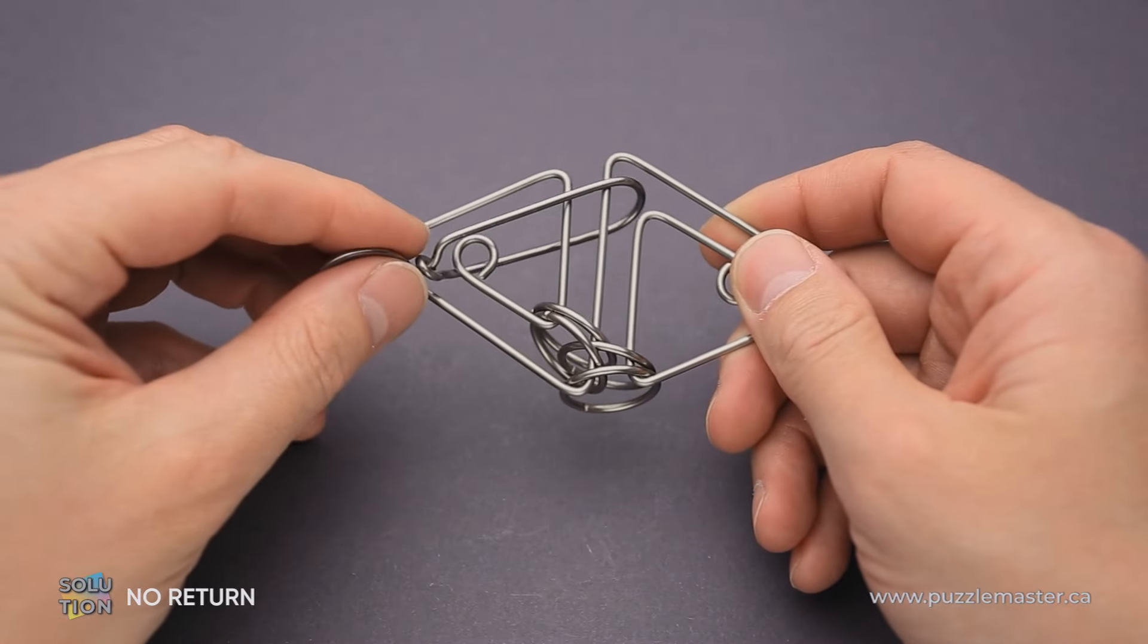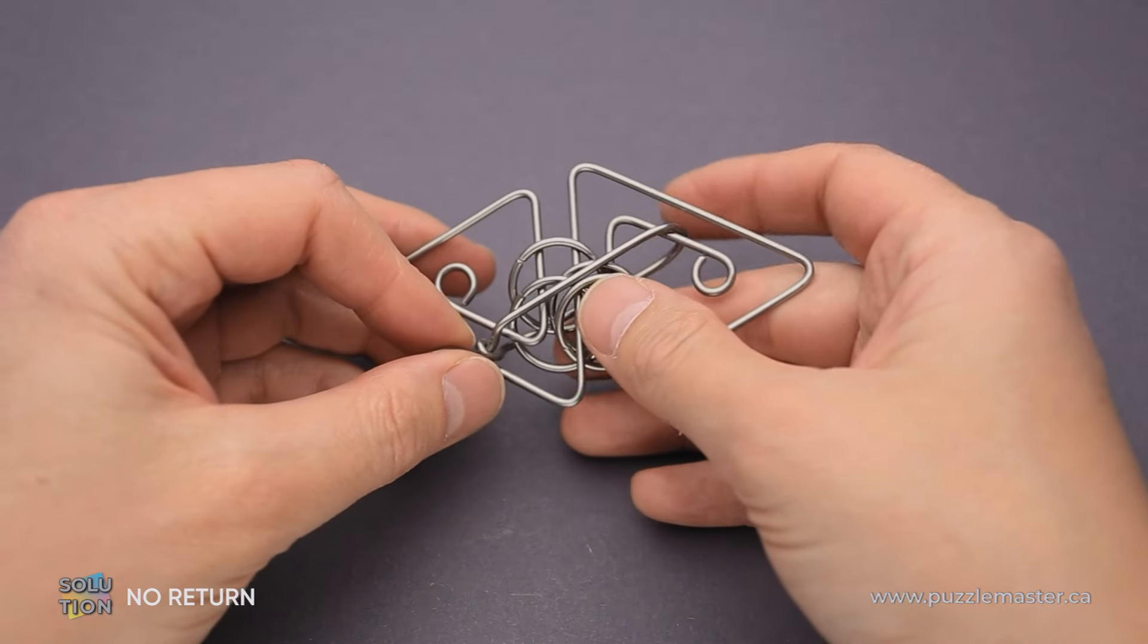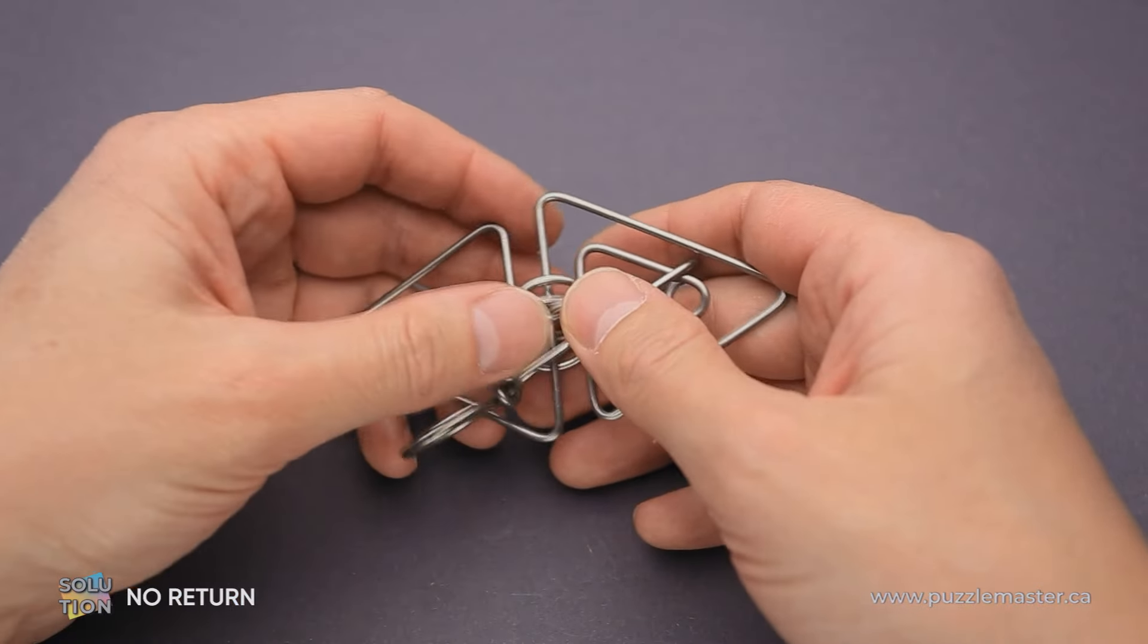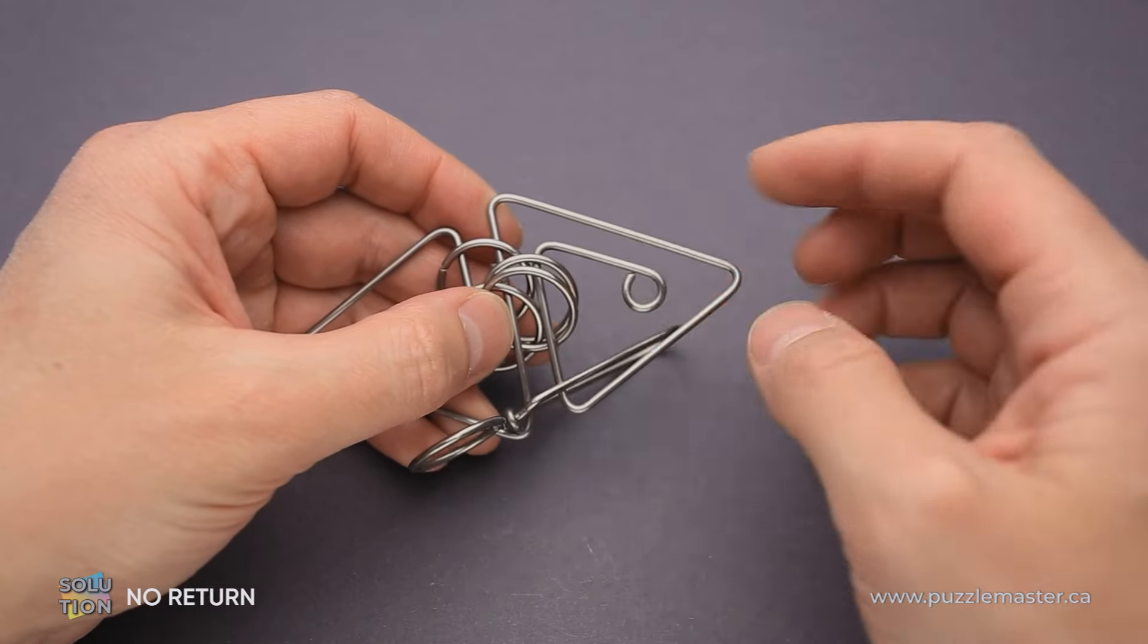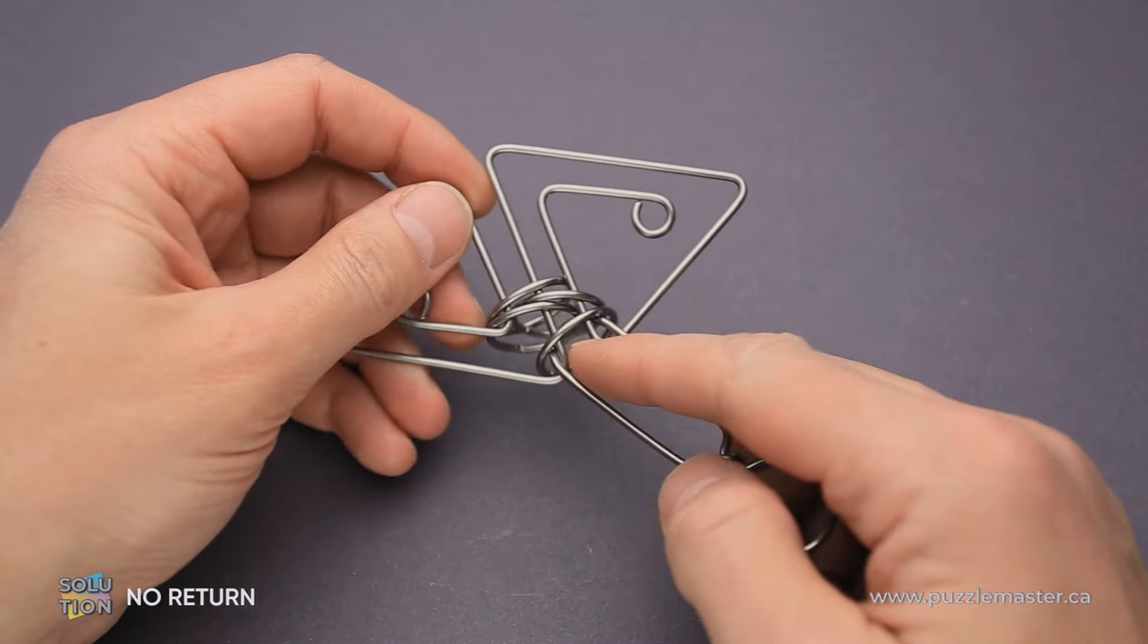The next step, you move the handle around this left part. Now you put all the rings inside of the handle, move it forward and move it around this part. The handle is right here on the bottom.